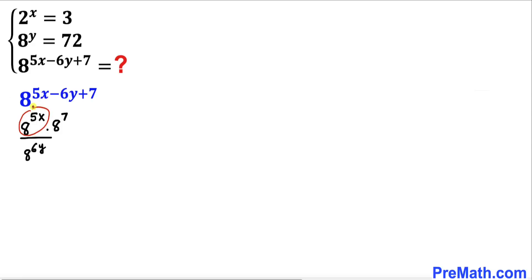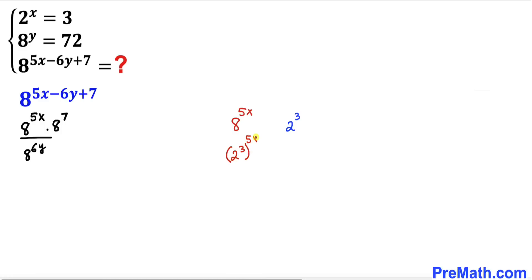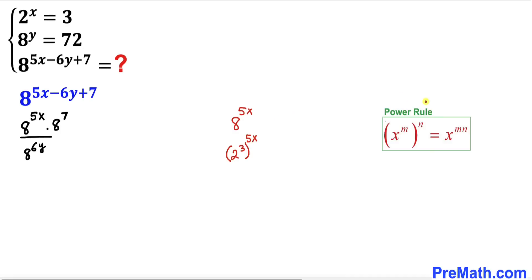Now let's focus on the part 8^(5x). The base 8 can be written as 2^3, so we can write this whole thing as (2^3)^(5x). Now let's recall the power rule of exponents — we are going to apply it here, which means we multiply out these nested exponents.